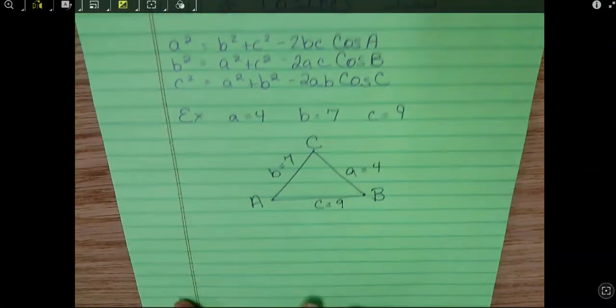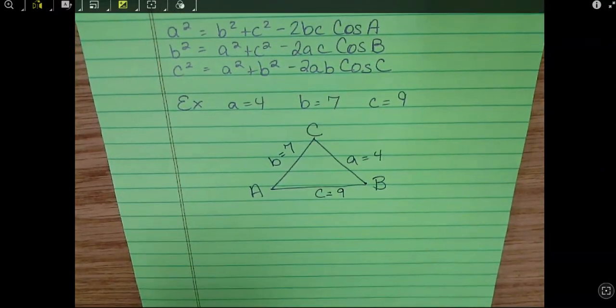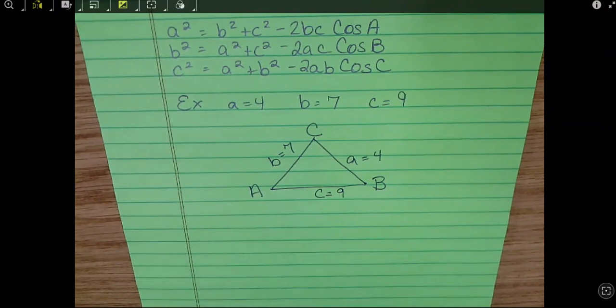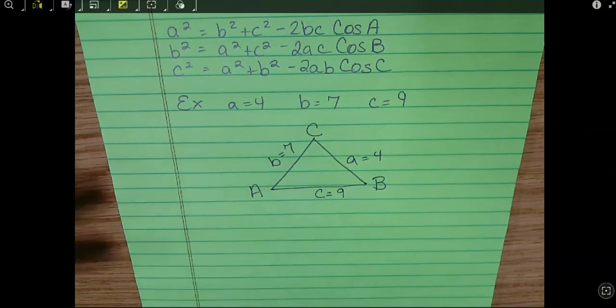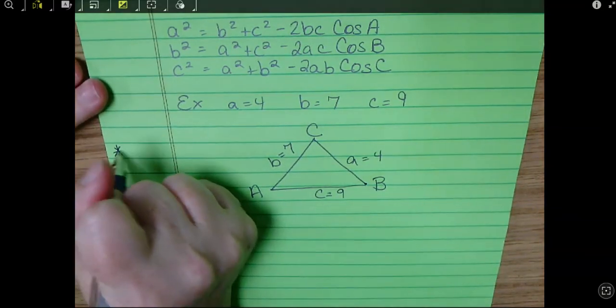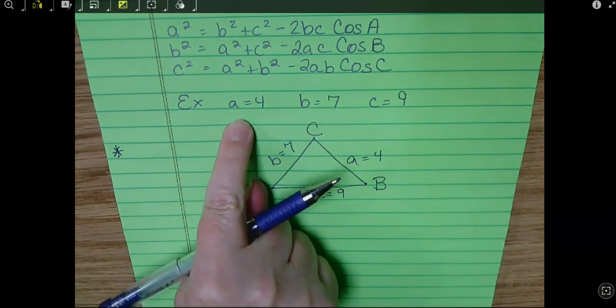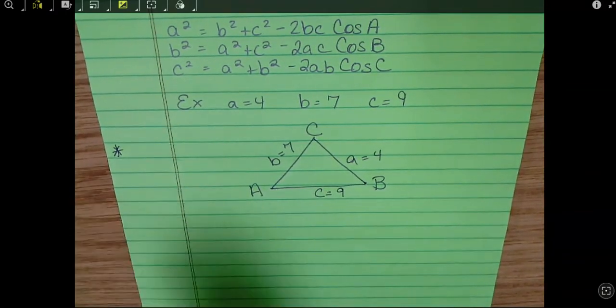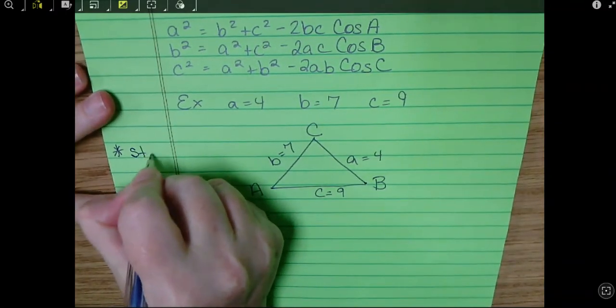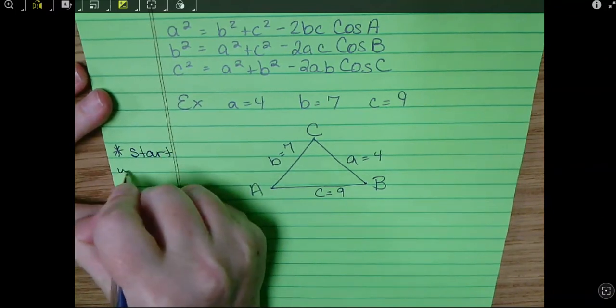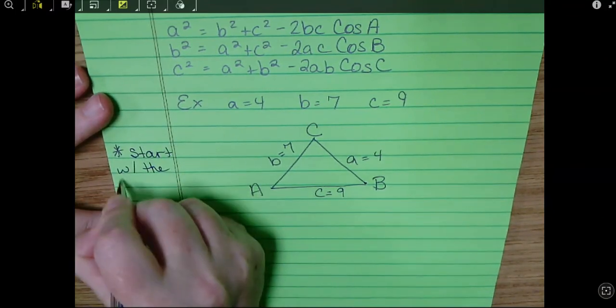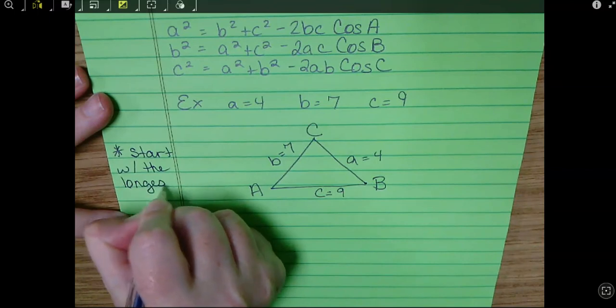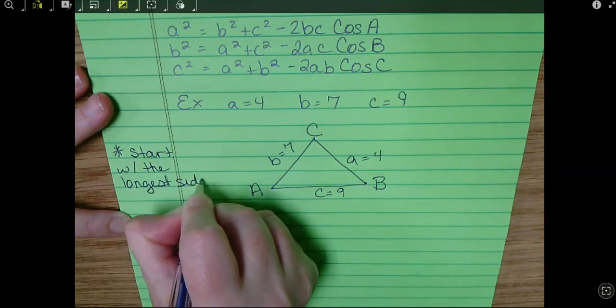Okay, so not a big deal. Again, hopefully it's obvious that we don't have all the letters because we have no angles. Now, with this, you have to be very particular. Unfortunately, I am dying. I want to use A so bad, but you want to start with the longest side or the biggest side, the biggest number.